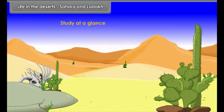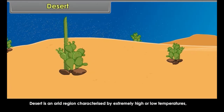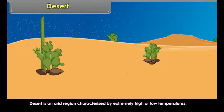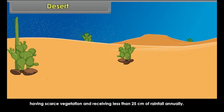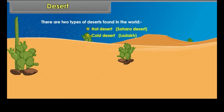Study at a glance. Desert: A desert is an arid region characterized by extremely high or low temperatures, scarce vegetation, and receiving less than 25 cm of rainfall annually. There are two types of deserts found in the world: Hot Desert — Sahara Desert, and Cold Desert — Ladakh.